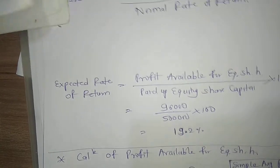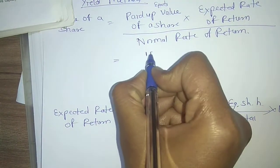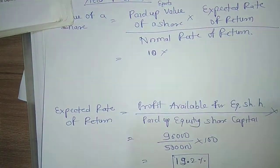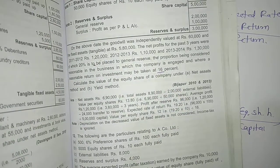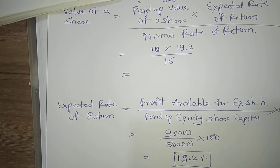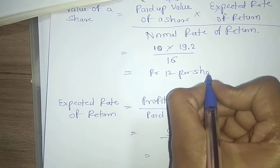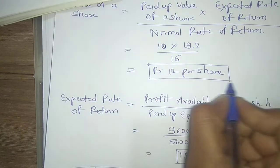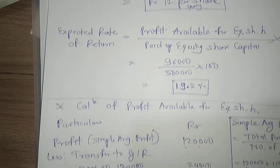Using the expected rate of return of 19.2%, we calculate the main formula: paid-up value of a share is rupees 10 (fully paid), expected return is 19.2%, normal return given in the problem is 16%. So: 10 × 19.2 / 16 = rupees 12 per equity share — this is the yield value.